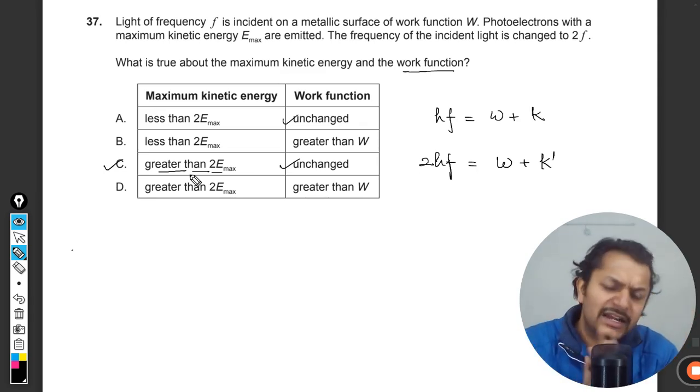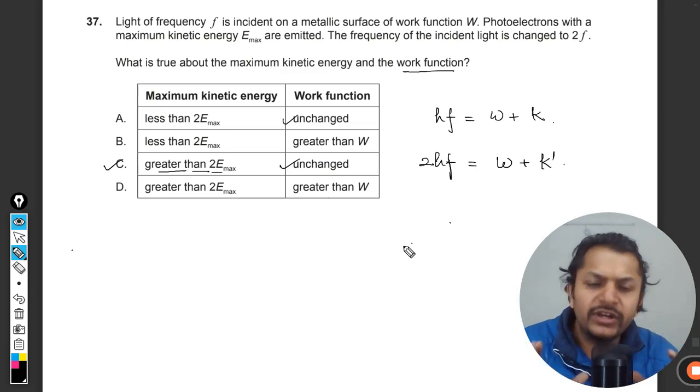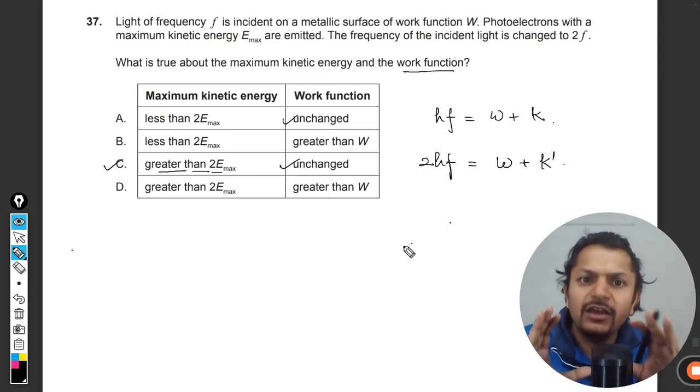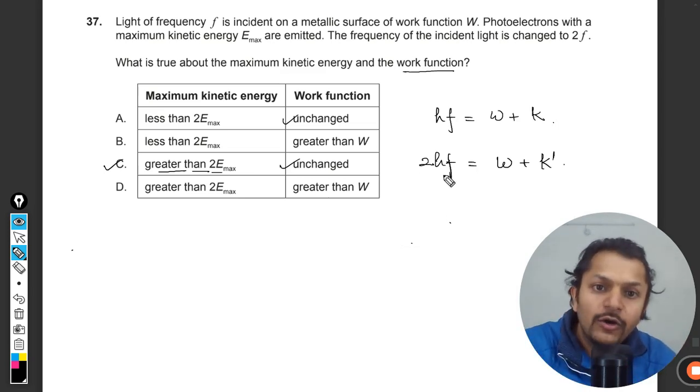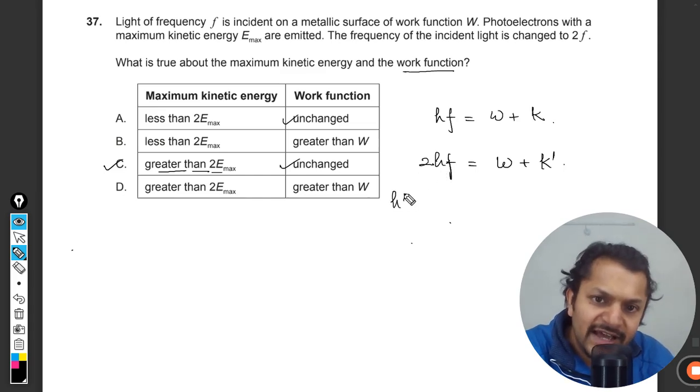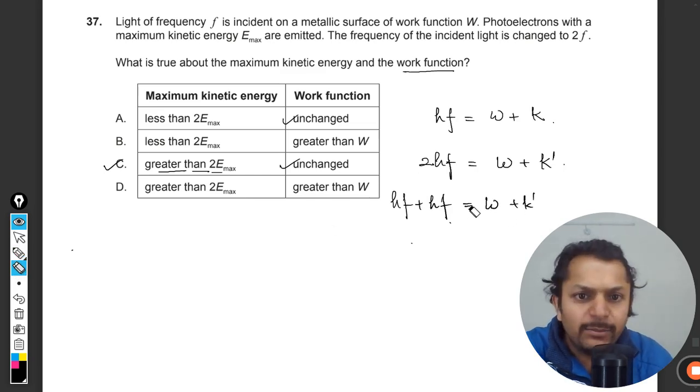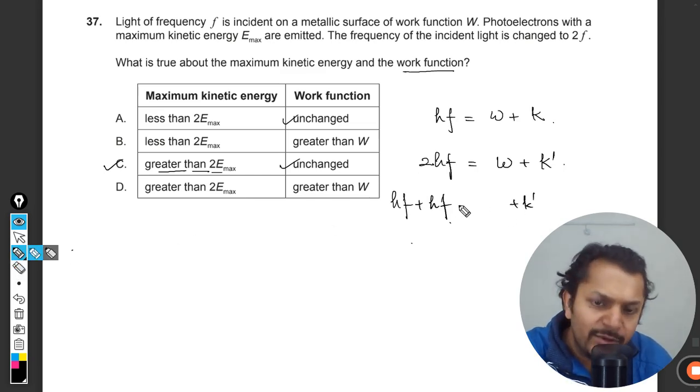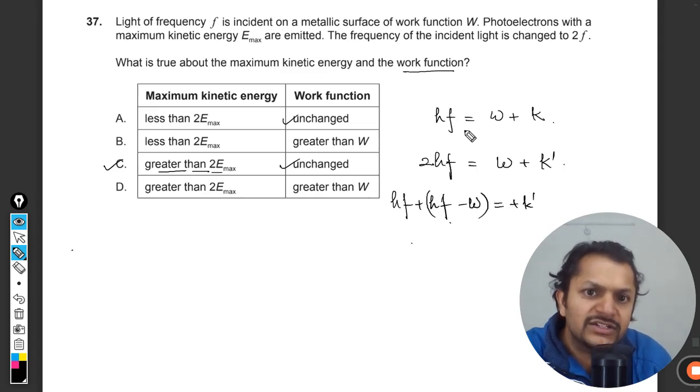Let us see. What we do here is we are going to play with the equation. How this hf is written as hf + hf, and that is W + k'. Let us take W to the other side also, so that will become hf - W = k. So it will be hf + k = k'.